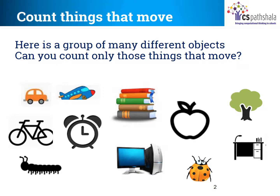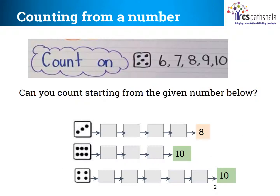Children, tell me how many of these objects move? Can you count them? My answer is 5. Did you observe, children? Till now the counting began from 1. Let us now find out if we always need to count from 1, or can we count from a number other than 1.